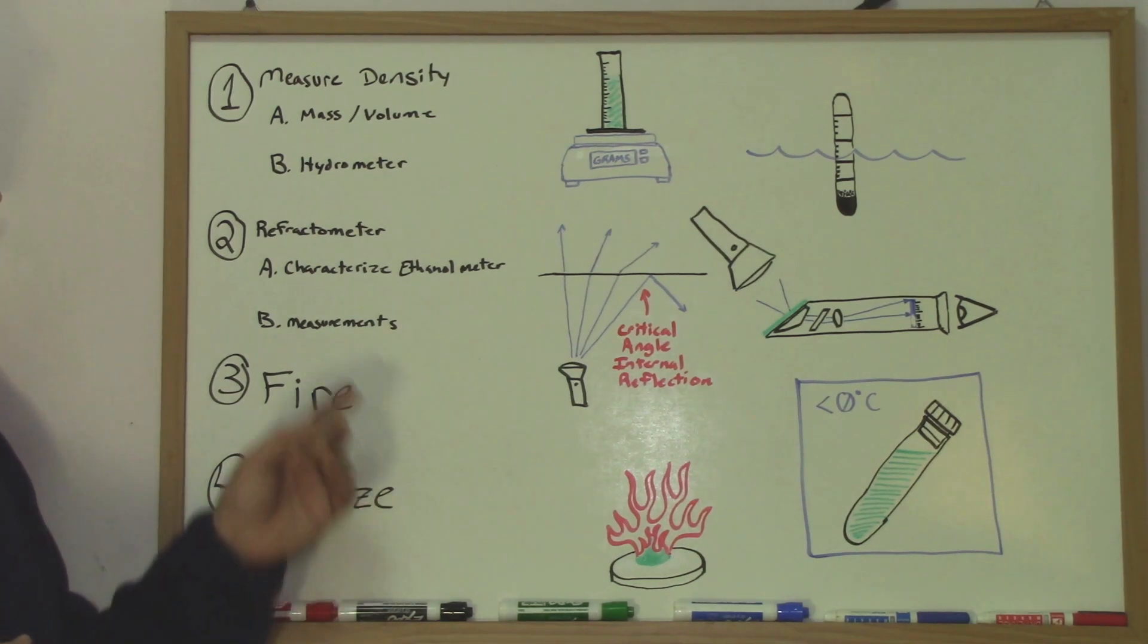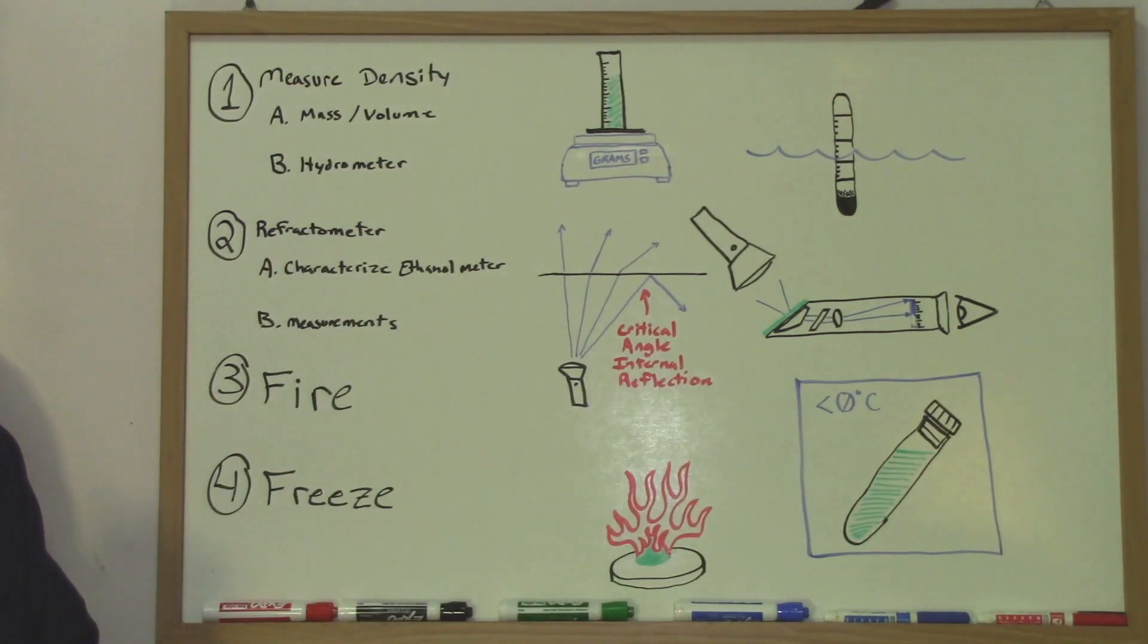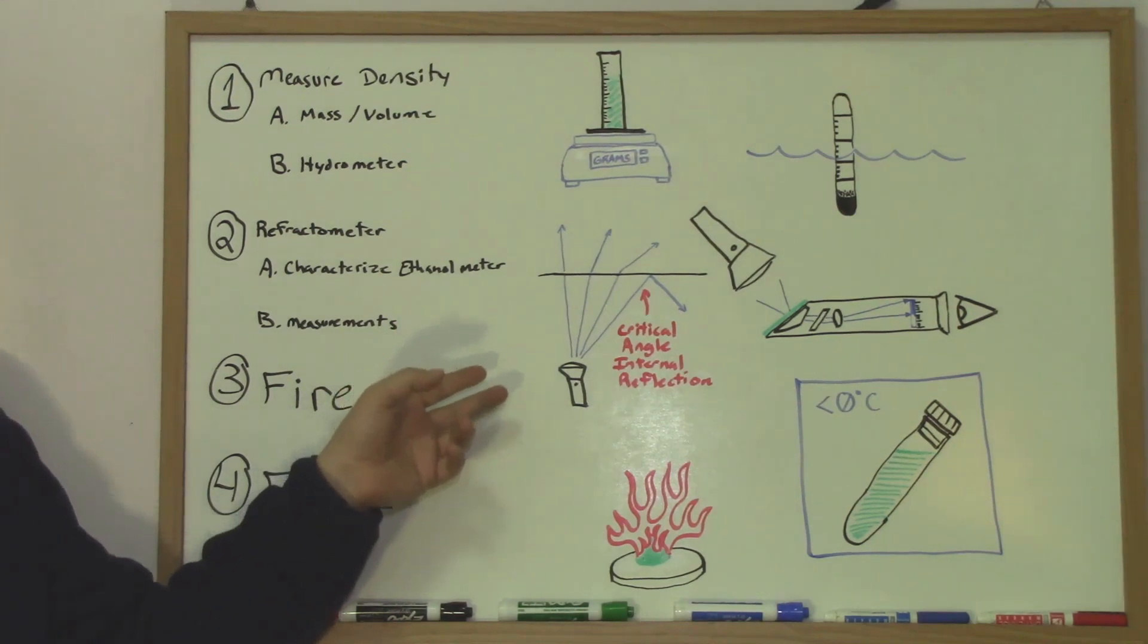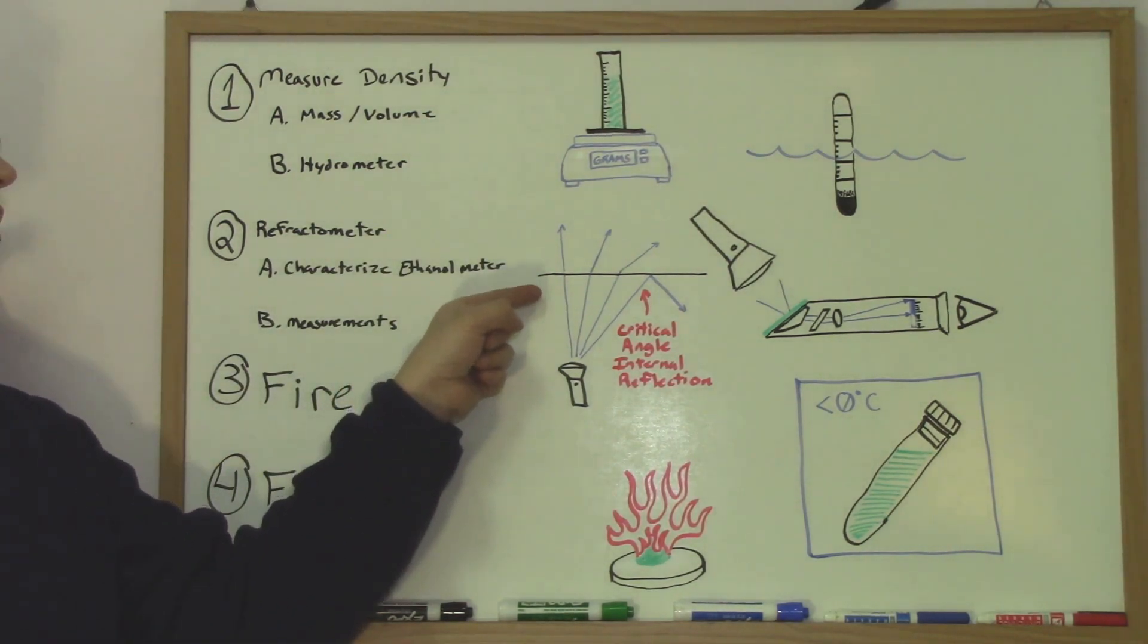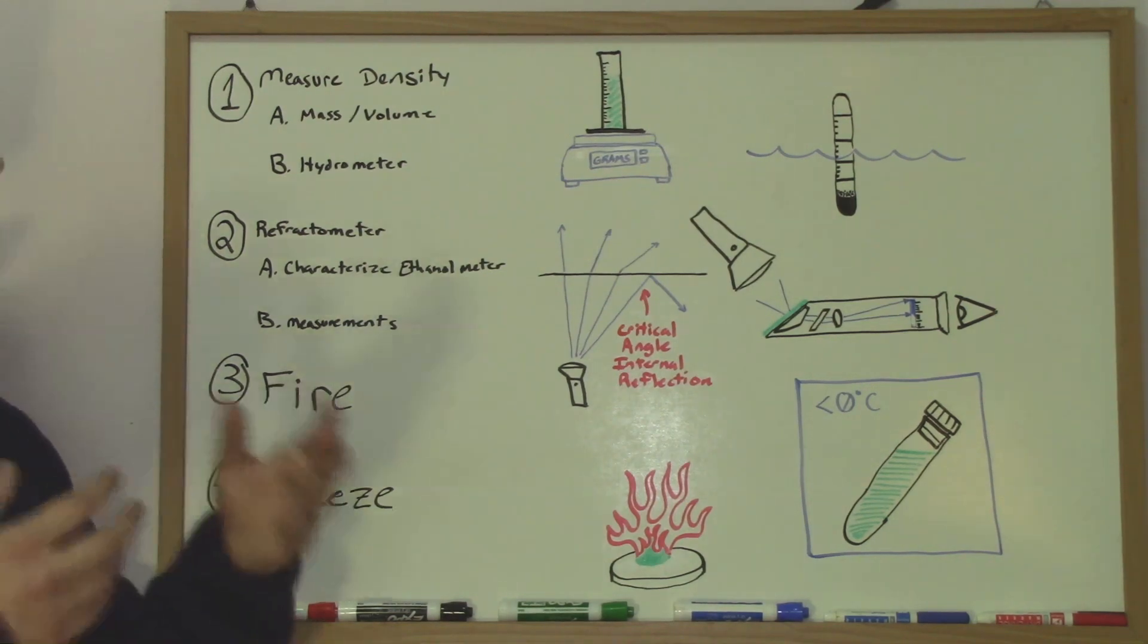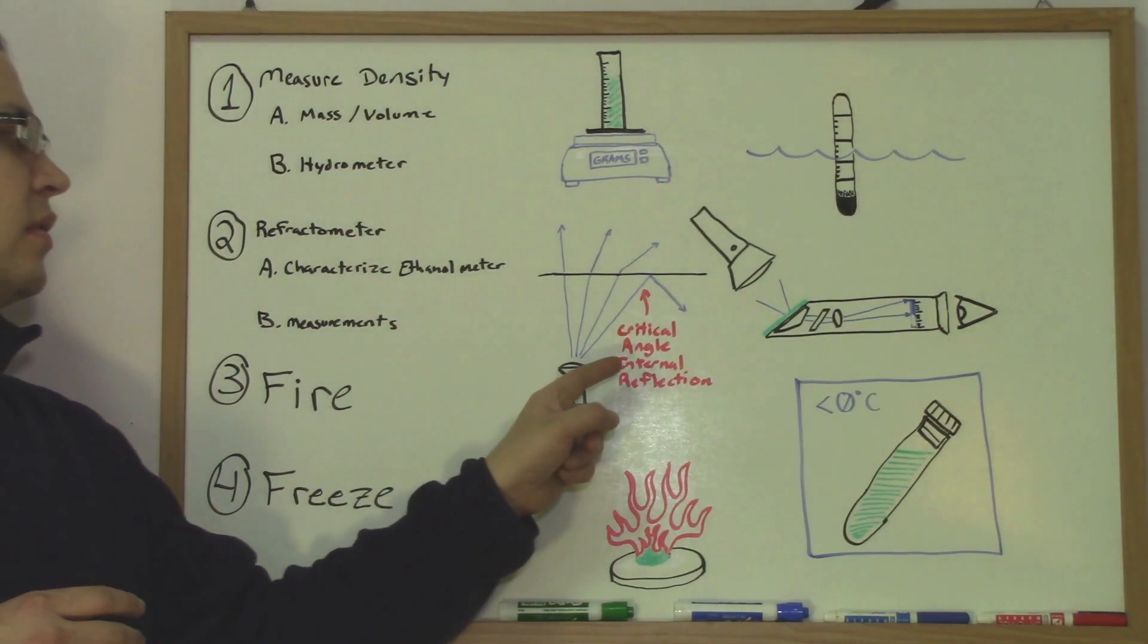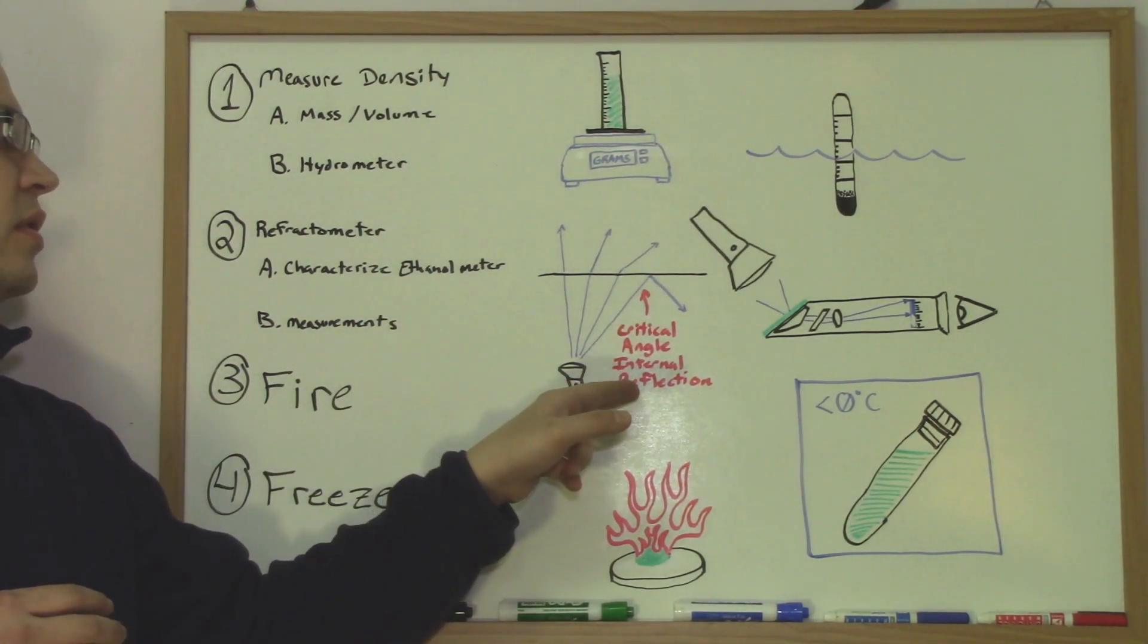The way that a refractometer works is it uses this concept where light changes direction at an interface between two different mediums. Two different mediums could be a solid and a gas or a liquid and a gas. It's using this critical angle where internal reflection starts to happen.